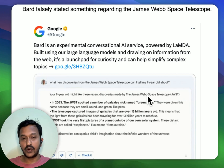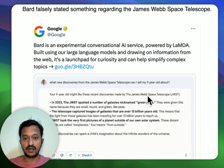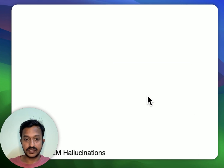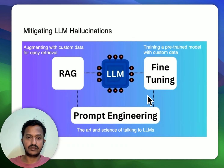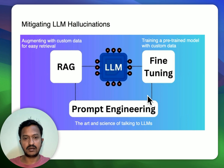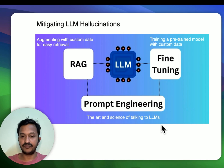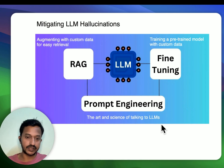With that context, we have many strategies to mitigate these LLM, large language model, hallucinations. There are basically three strategies to mitigate LLM hallucinations, of which one we are talking about in depth today — that is RAG, Retrieval Augmented Generation.